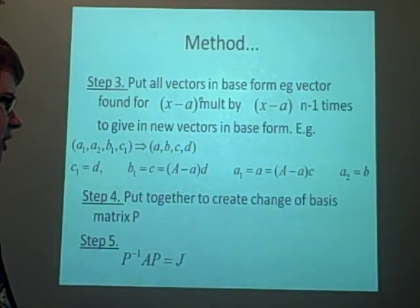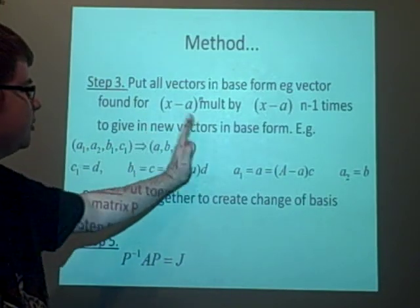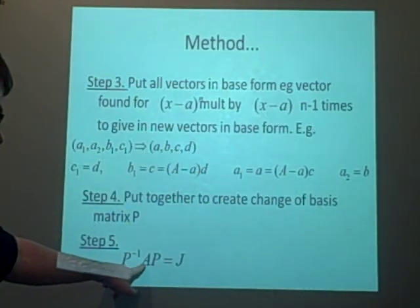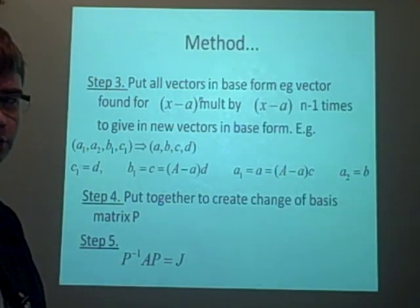And then you put them together to create the change of basis, so you stack them up, and this will make it that P inverse AP is equal to the Jordan Normal form.